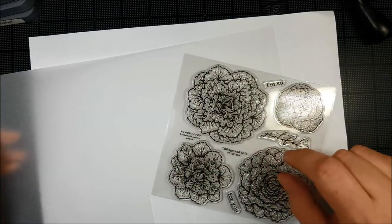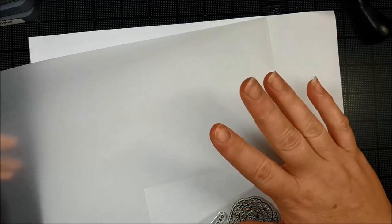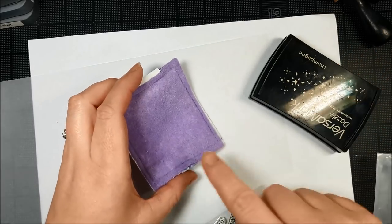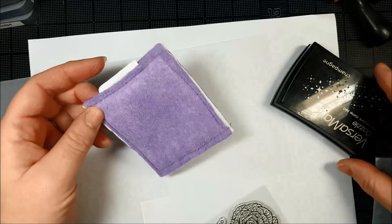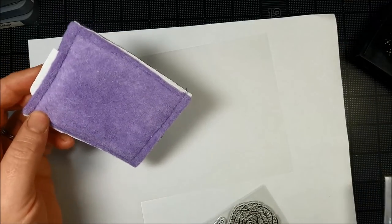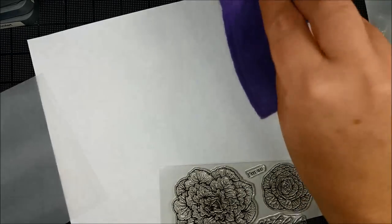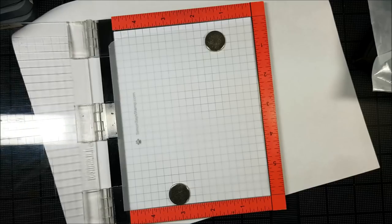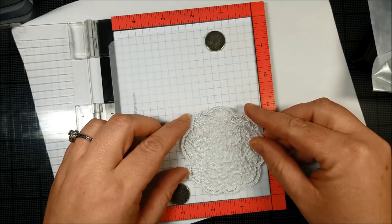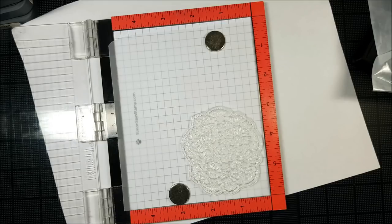So we're going to use some of our cabbage and kale images. I've got some vellum paper and I've got a piece of scrap paper here. I've also got my anti-static tool bag and some Versamark. So first I'm going to treat my vellum. It can get very sticky and staticky. I also treat my paper too so my embossing powder just flakes off.